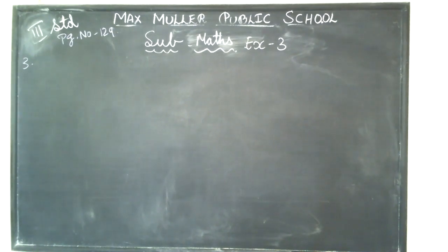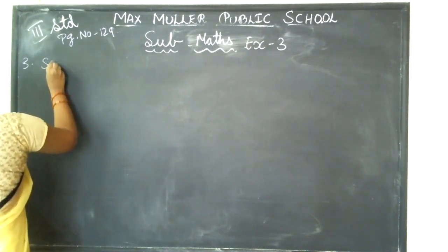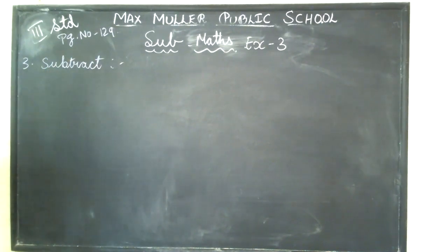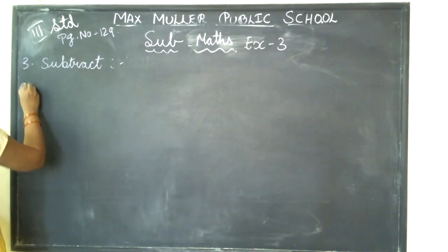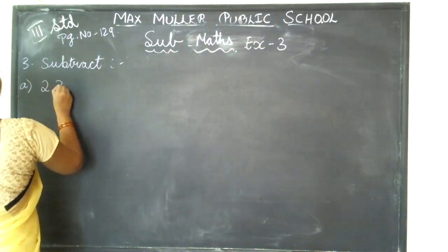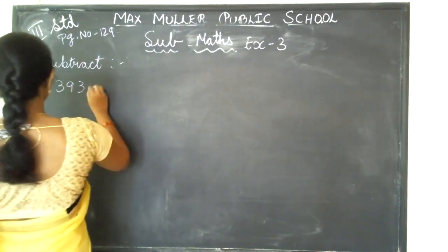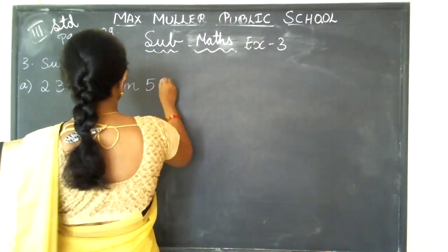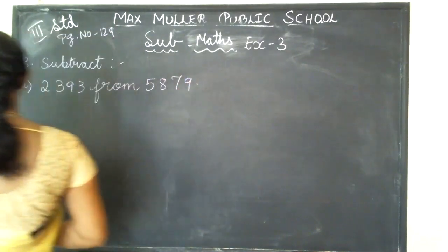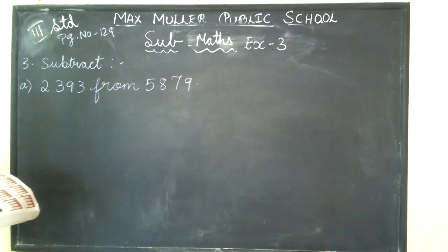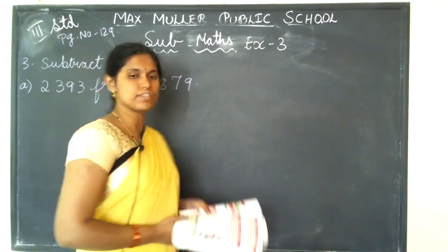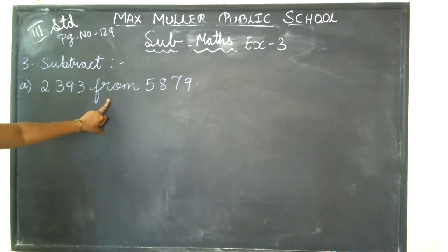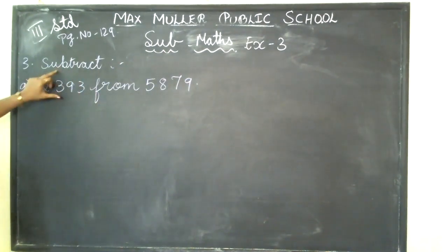Subtract. Third main — subtract I have given. First chunk you see: 2393 from 5879. Here you can see 2393 from 5879 they have given. In the middle they have not given any sign — you can see 'from'. So, what you are going to do now? The heading says subtract, so you have to do subtraction.